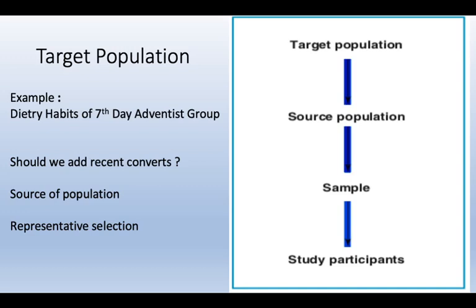For example, if I want to study the association of any disease with the Punjabi population, my prime target would be the province of Punjab rather than discussing those issues in KPK, Balochistan, or any other remote area. Target population, source of population, sample, and study participants are the core criteria for any cross-sectional study.